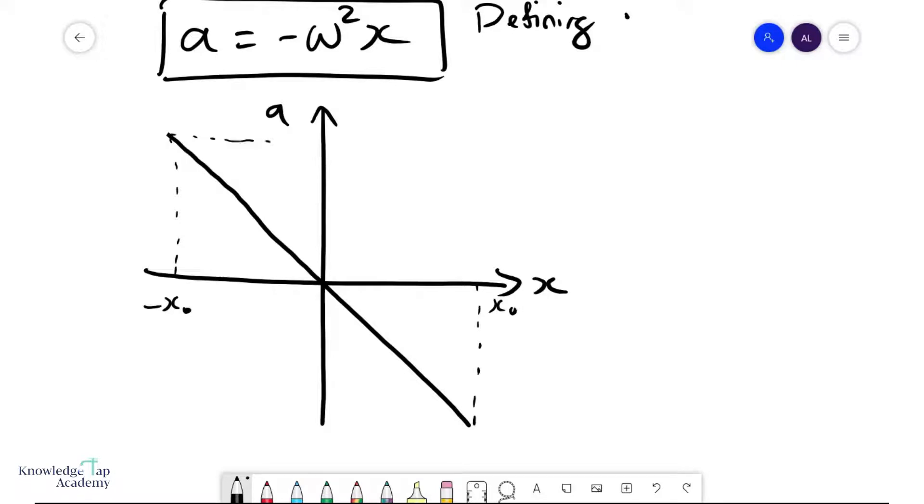The maximum acceleration will be plus omega square x naught. This of course be minus omega squared x naught, and the gradient of this line must be minus omega squared.